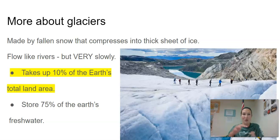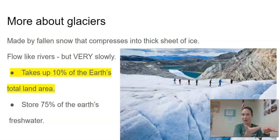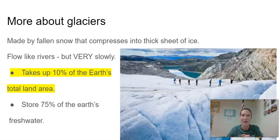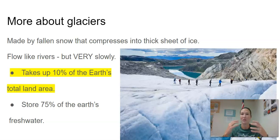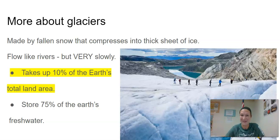Glaciers are made by fallen snow that compresses and presses into a really thick sheet of ice, and they flow like a river but really, really slowly. The bottom layer closest to the ground is actually liquid, so that can flow. They take up 10 percent of our earth's total land area — mostly the big ones up in the Arctic and Antarctic. They store 75 percent of our earth's freshwater, so most of the drinkable, usable freshwater is trapped in glaciers.